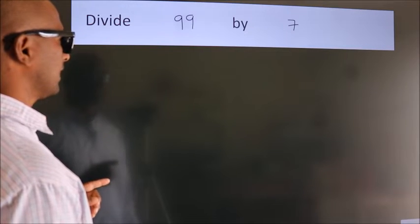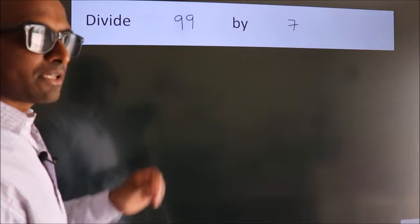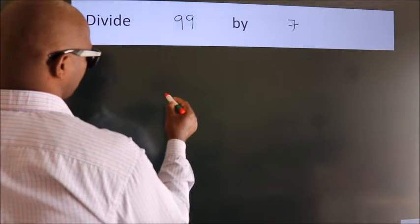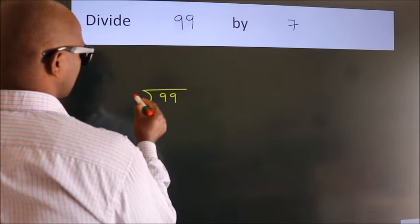Divide 99 by 7. To do this division, we should frame it in this way. 99 here, 7 here.